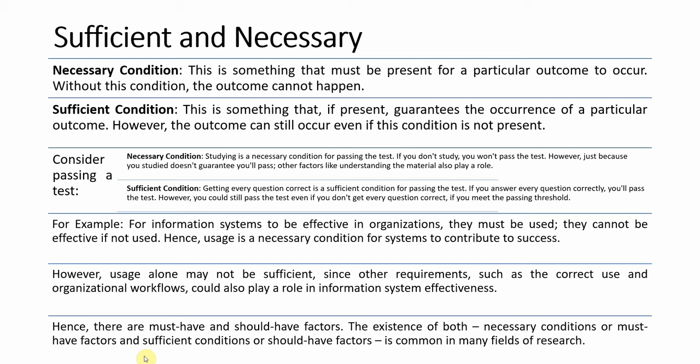The existence of both Necessary Conditions (must-have factors) and Sufficient Conditions (should-have factors) is common in many fields of research. Remember: if your outcome cannot occur without a particular condition, that is a Necessary Condition. If your outcome can occur in the presence or absence of a condition, that is a Sufficient Condition. The difference is must-have versus should-have.